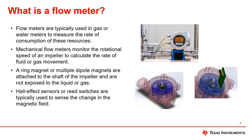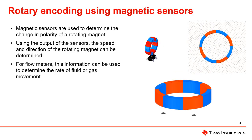The hall effect latch counts the number of pulses, which is used to determine the speed of the impeller. Rotary encoding is determining the speed and direction of angular or linear travel using multipole magnets to determine the resolution of steps. By increasing the number of poles on the magnet, it increases the resolution and allows more precise position measurements. Magnetic sensors can be used to sense the change in polarity of the rotating magnet to measure the speed and direction.